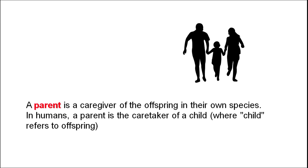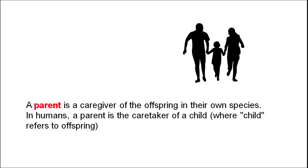The third important component is a parent. A parent is basically a caregiver of the offspring in their own species. In humans, a parent is the caretaker of a child, where child refers to an offspring.